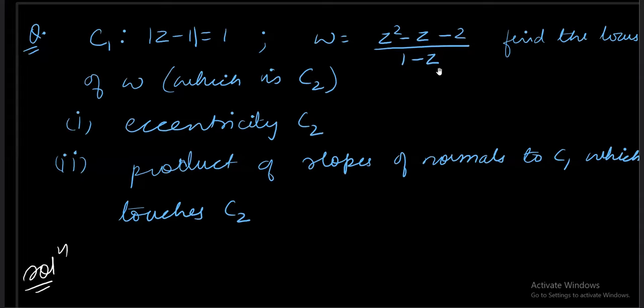Usually in the locus problem, we use x plus iota y. So when you come across questions of locus, you can use z equals x plus iota y and proceed. But normally I will avoid x plus iota y. You can use it in combination.